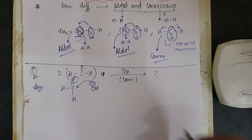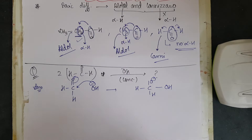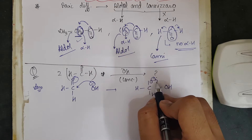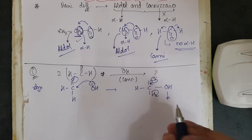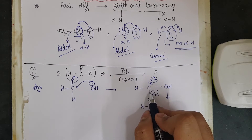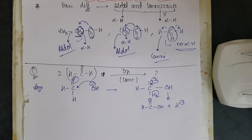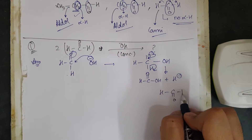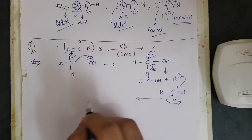So OH⁻ attacks the carbonyl to give HC(OH)(O⁻)H. The next step: the electron density on this bond goes onto the C=O bond, which takes out the H⁻. So a double bond forms here and H⁻ is expelled. We have used only one mole so far, so we take the second mole of HCHO, which is attacked by H⁻ to give HCH₂O⁻.